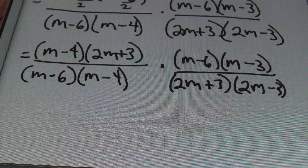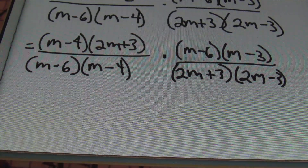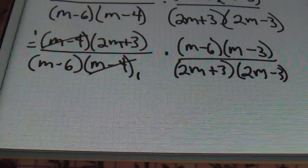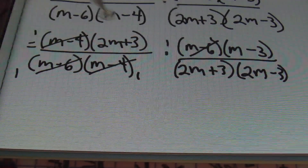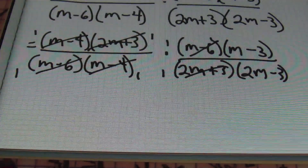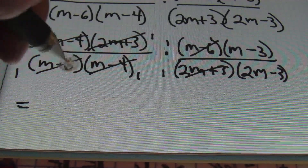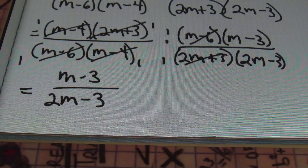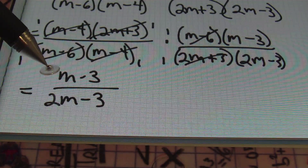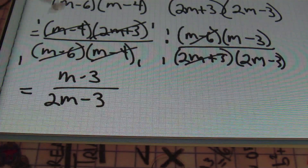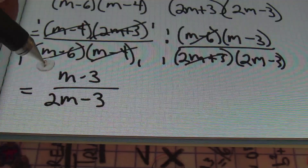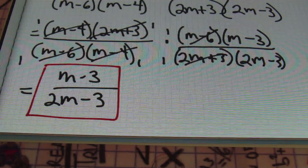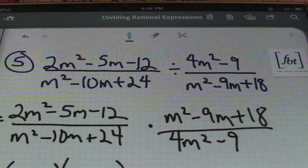From here I can finally simplify before I multiply. The m minus 4s cancel out, the m minus 6 cancels out, and the 2m plus 3s cancel out. That leaves m minus 3 over 2m minus 3. Since all elements in this rational expression do not have 3 or m in common across the fraction, you can't continue to simplify. This is the final answer: m minus 3 over 2m minus 3. That was problem number 5.